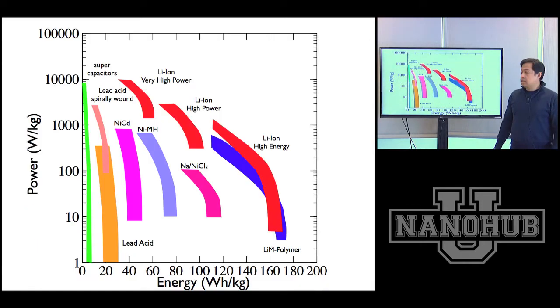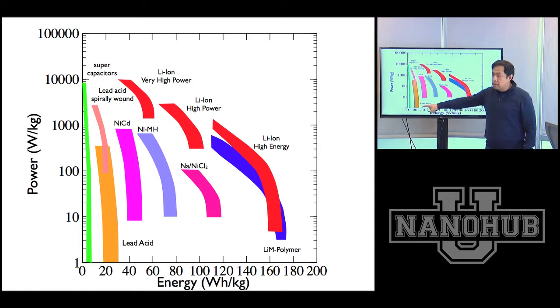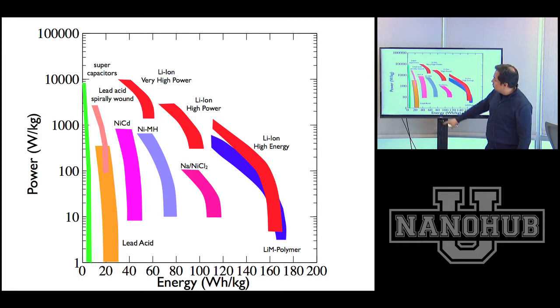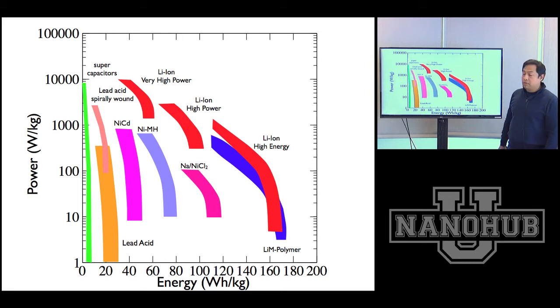This is a plot of energy density versus power density, and when you want to buy a battery or make a battery, this is where you compare all the different technologies. You can see all sorts of technologies, such as nickel-cadmium, nickel-metal hydride, recent technologies like sodium-nickel-dichloride. But you can see the one that is being used the most these days, the lithium-ion battery technology.